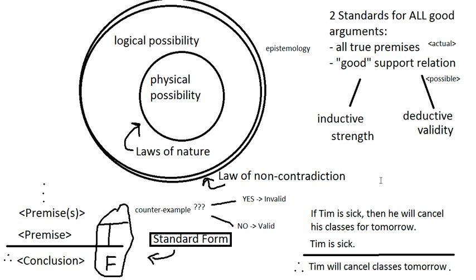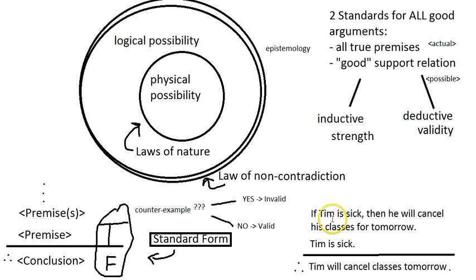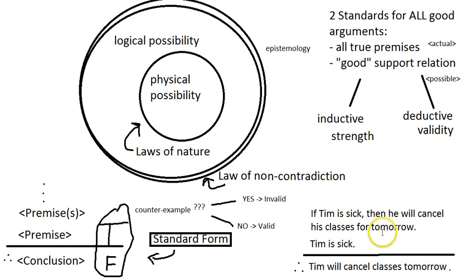The vast majority of arguments you make during the day, or the reasoning you use, does not pass the standard of validity. It's actually inductive — just like with Sherlock Holmes. He's not making valid arguments; he's making maybe strong, inductively strong arguments. Let's finish up validity. Here's a valid argument: 'If Tim is sick, then he will cancel his classes for tomorrow. Tim is sick. Therefore, Tim will cancel classes tomorrow.' Now, in terms of what's actually the case, the first premise is not really true — sometimes I've taught when sick — so in the real world this premise is false.